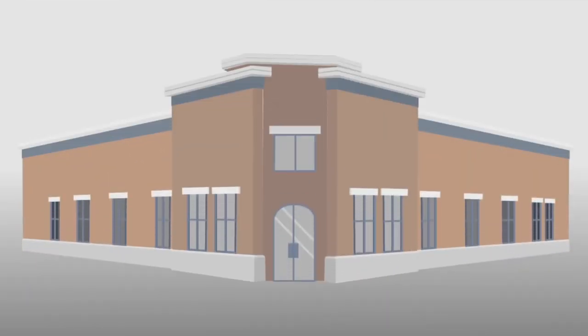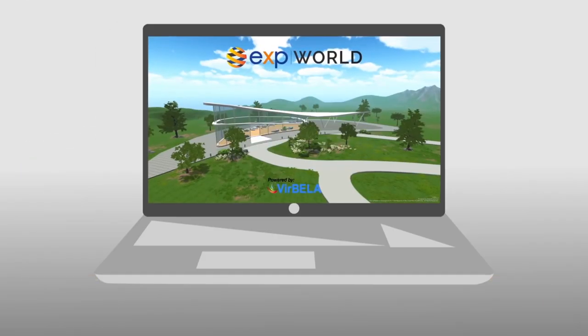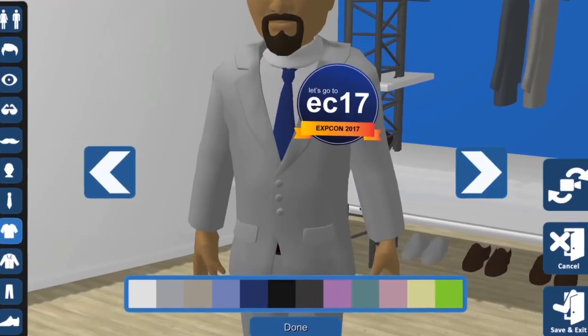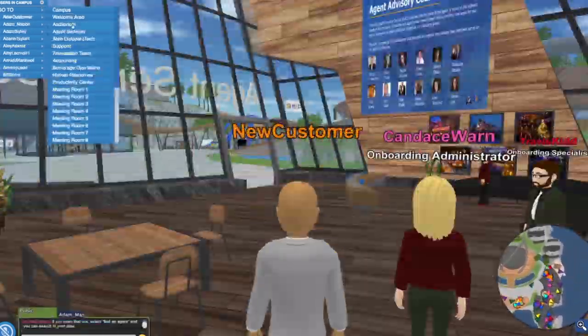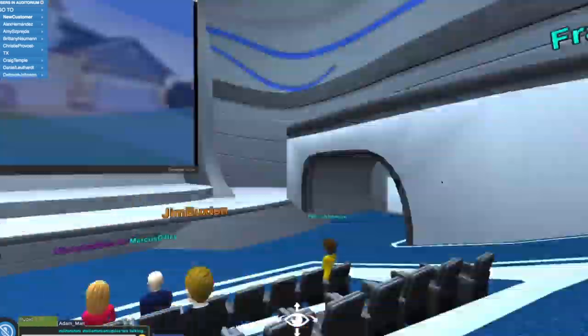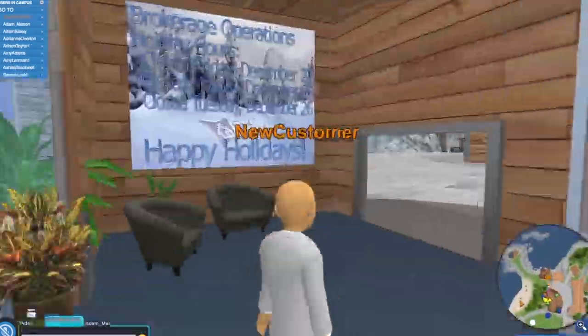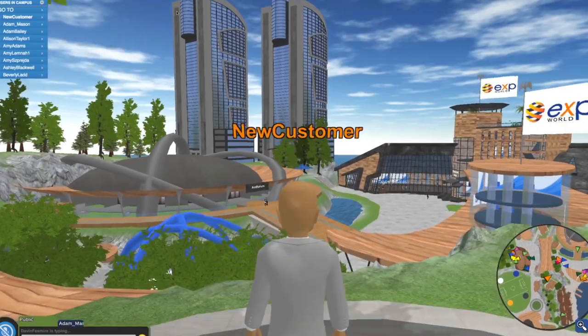eXp doesn't need a brick and mortar. Instead, they offer all of their agents access to the eXp online campus, where they can get a digital avatar and take courses on real estate. Here, agents can meet other agents for referrals across the entire nation.